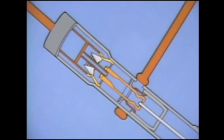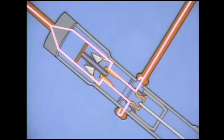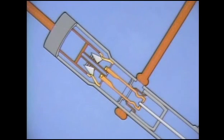In addition to housing the interrupting mechanisms, the insulating tube is filled with SF6 gas at a low pressure. When the breaker is closed, the current path is through the stationary contact assembly and the main contact fingers.